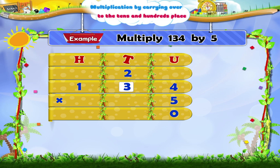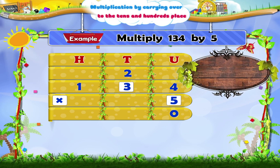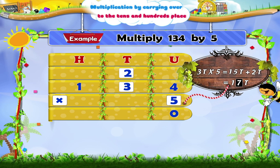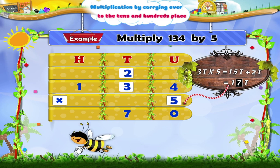Next, multiply the tenths digit 3 in 134 by 5. We get 15 tenths. Add to this the carried over 2. The product is 17 tenths. 17 tenths means 1 hundred plus 7 tenths. So write 7 in the product in the tenths place. Carry over 1 hundred to the hundredths place and write it above the hundredths in the multiplicand — that is, above 1.